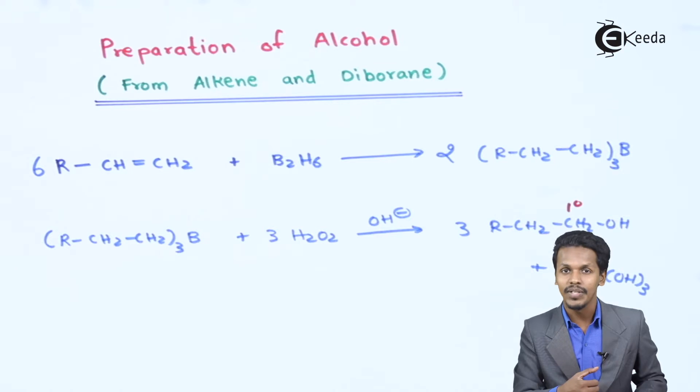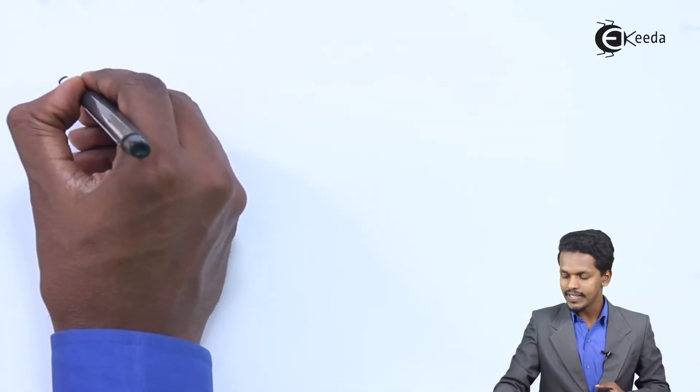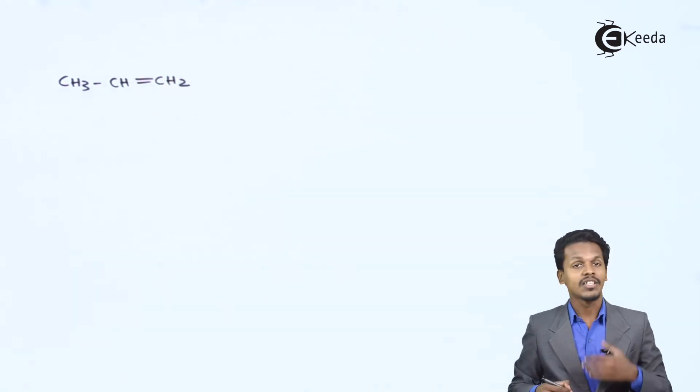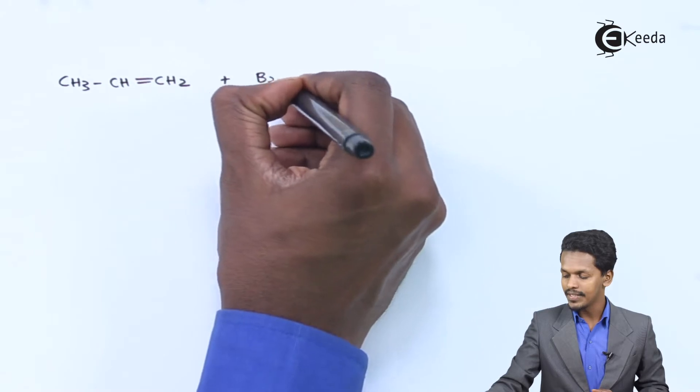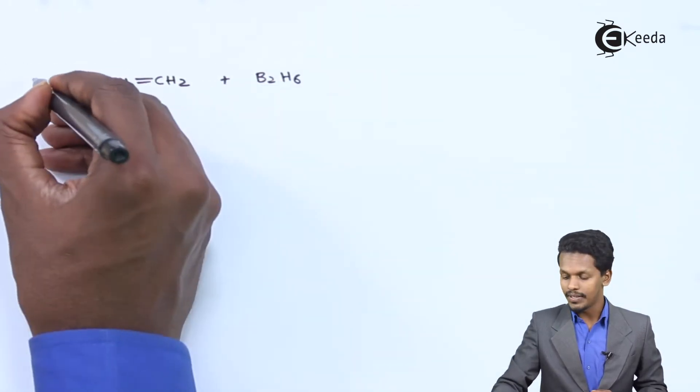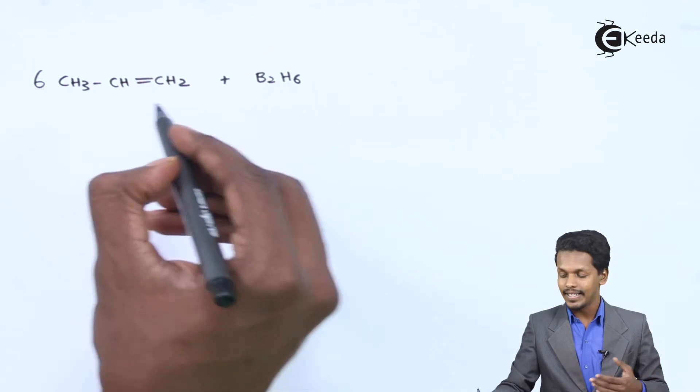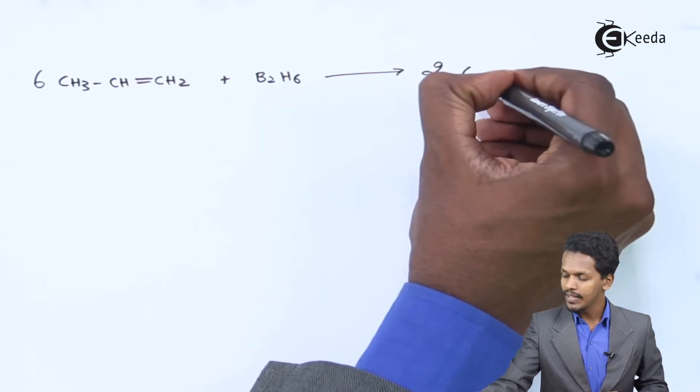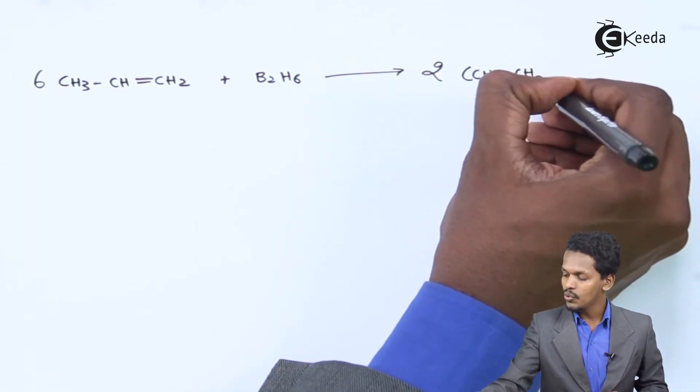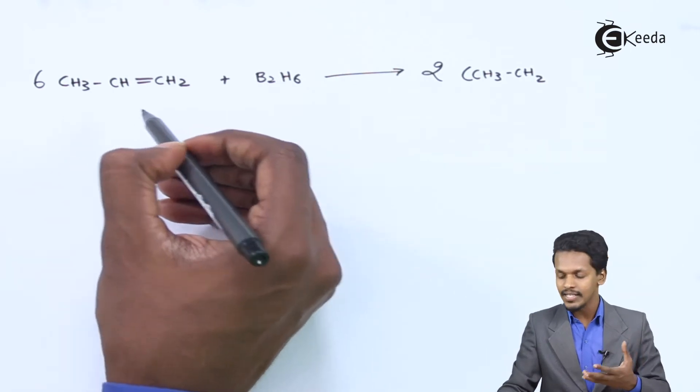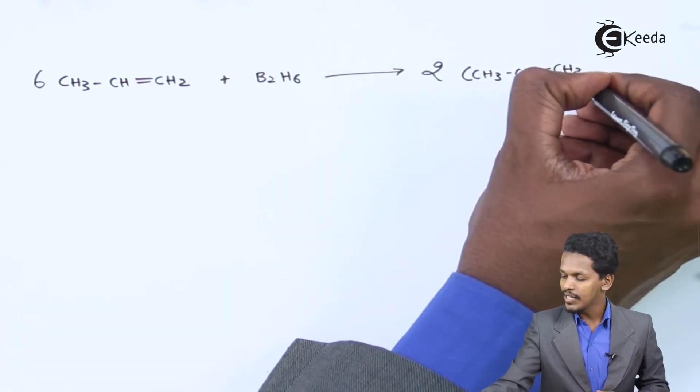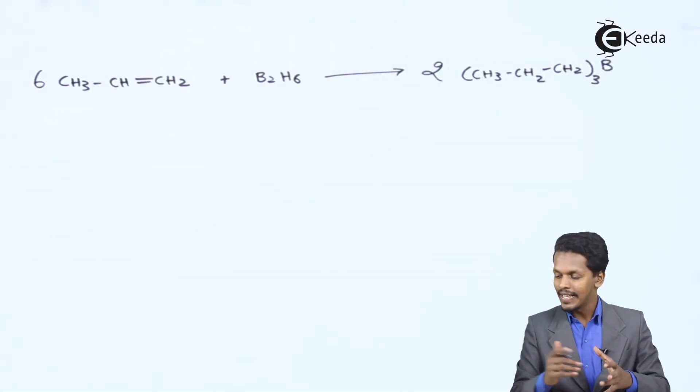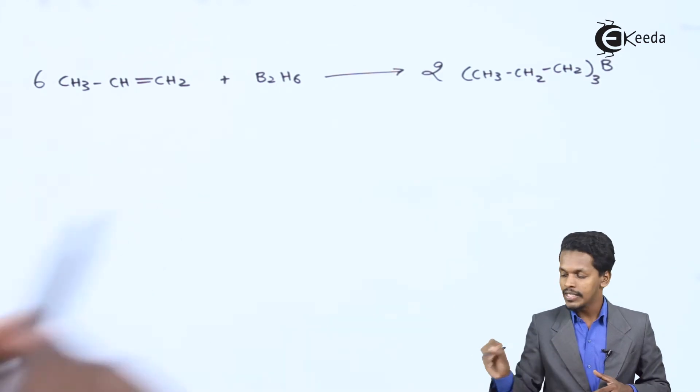Now let me give you a short example related to this one. Suppose friends if we have considered propene that is CH3-CH=CH2, and suppose if we are reacting with Diborane that is B2H6. Now this should be turned into 6 moles of the alkene along with B2H6. So the product that we could obtain is basically 2 moles of - I am writing over here as CH3-CH2 because obviously a kind of hydration reaction has taken place over here. And that is why this CH2 will get attached to the boron, while there are basically 3 alkyl groups that will be attached to the boron. So this is what we have obtained.